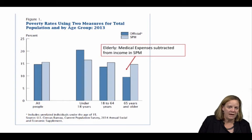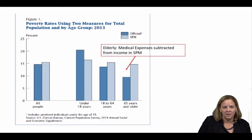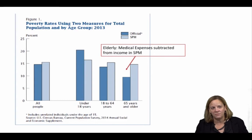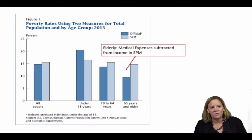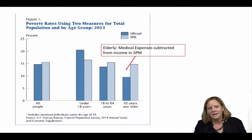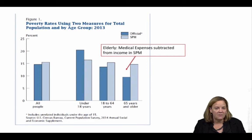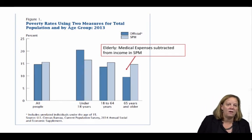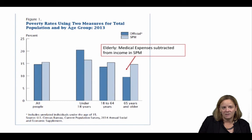For other subgroups we might look at, including those based on geography, there can be substantial differences between the Official Poverty Rate and the SPM. Because the SPM thresholds are adjusted for differences in housing costs across local areas, but Official Poverty Measure thresholds are not, areas with high housing costs tend to show higher poverty rates under the SPM. For example, in 2013, the poverty rate in California was estimated at 16% under the Official Measure, but more than 23% under the SPM. Most of this dramatic increase simply reflects the high cost of housing relative to the national average in many parts of California.